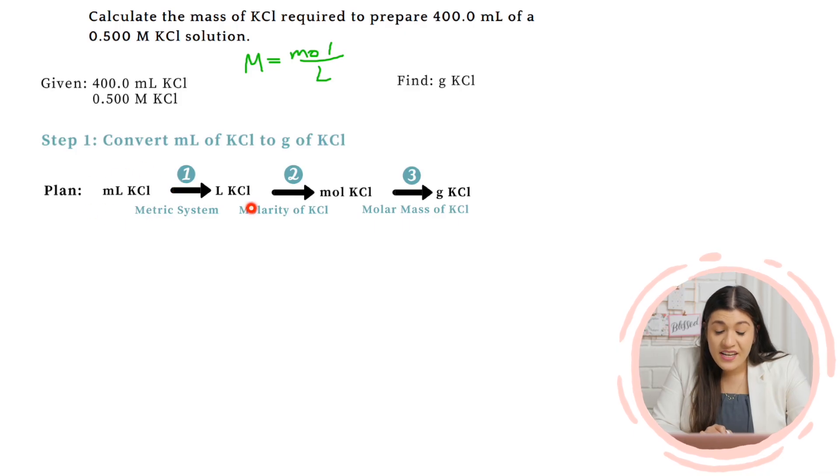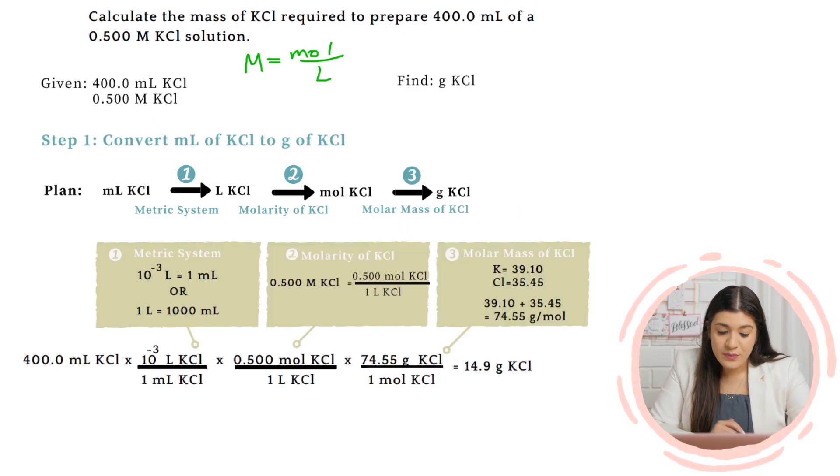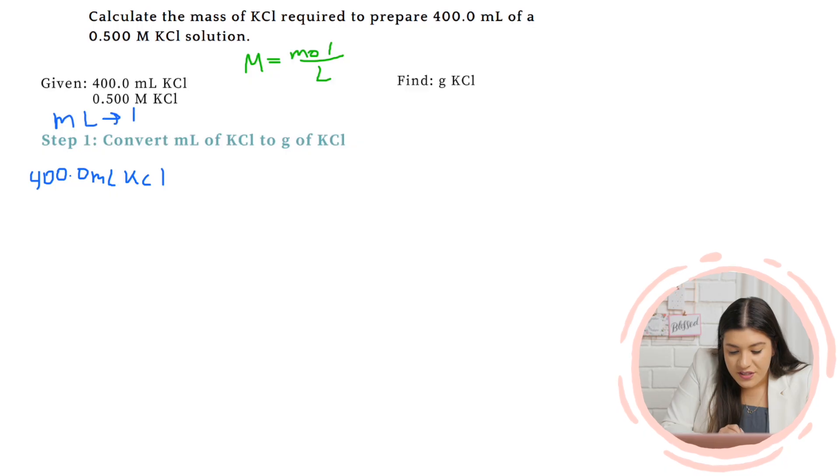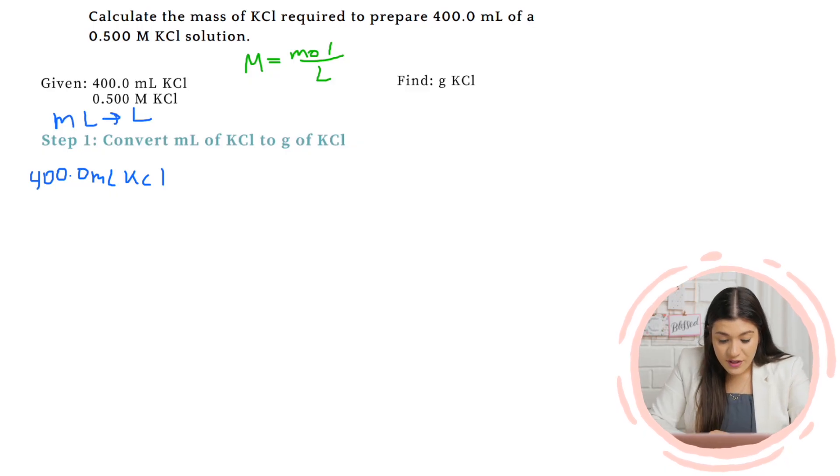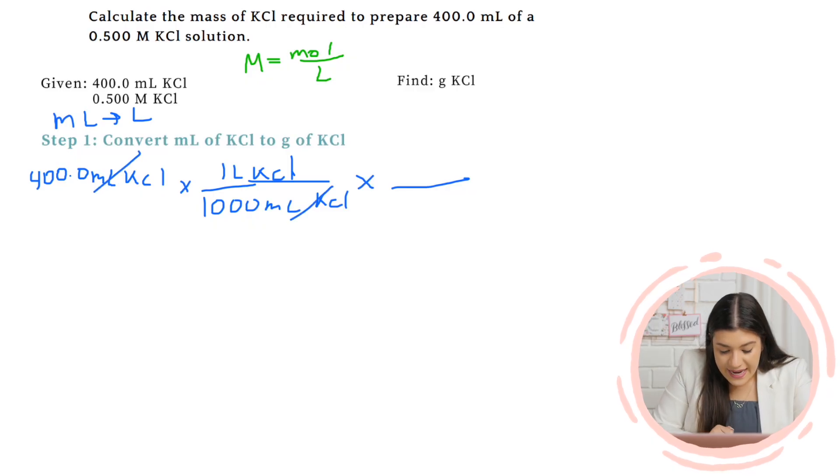I'm going to start off with milliliters of KCl, and then I'm going to work my way to liters of KCl. Where I'm going to start is just the 400 mL. First thing I want to do is convert this to liters. The reason why is because molarity is measured in liters and not in milliliters. I can divide this by a thousand to get to one liter of KCl.